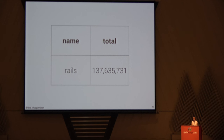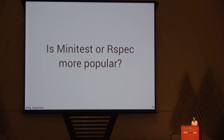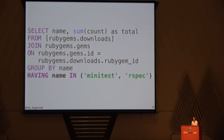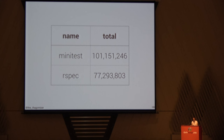In the spirit of Rubyists and our debates over test frameworks: is MiniTest or RSpec more popular? Everyone can think to themselves for a moment. Here's the query using HAVING, and here are the results — the query took about five seconds. MiniTest is winning. We still went with RSpec for some of our examples and MiniTest for others, but it was actually fairly surprising to us that MiniTest has more downloads.